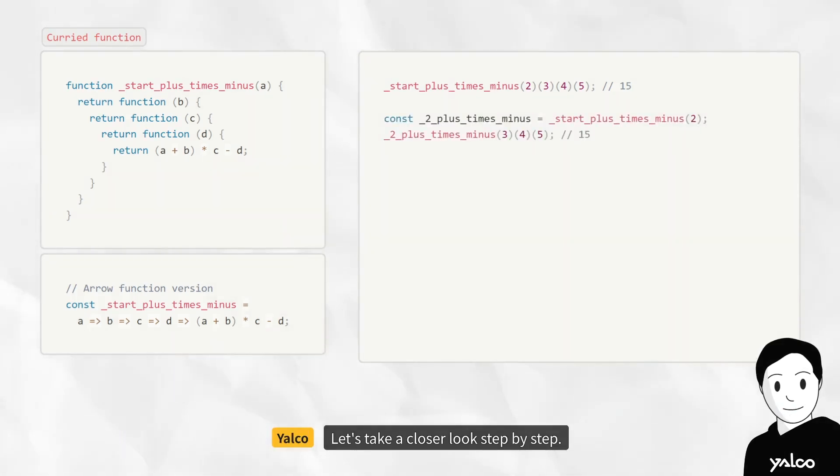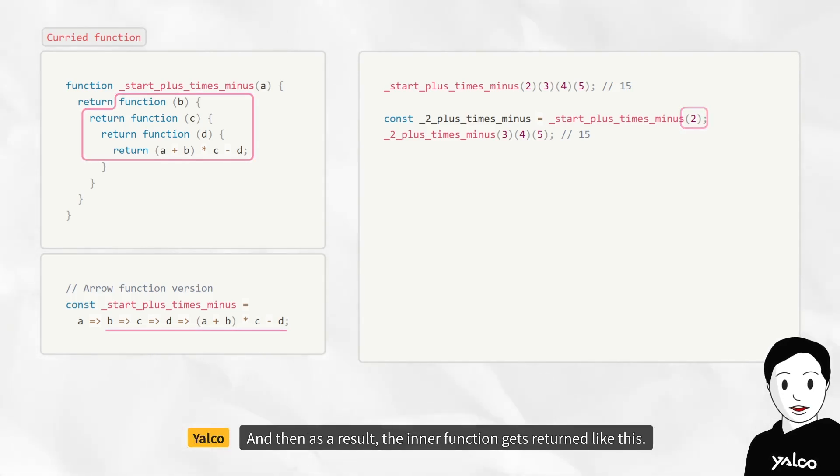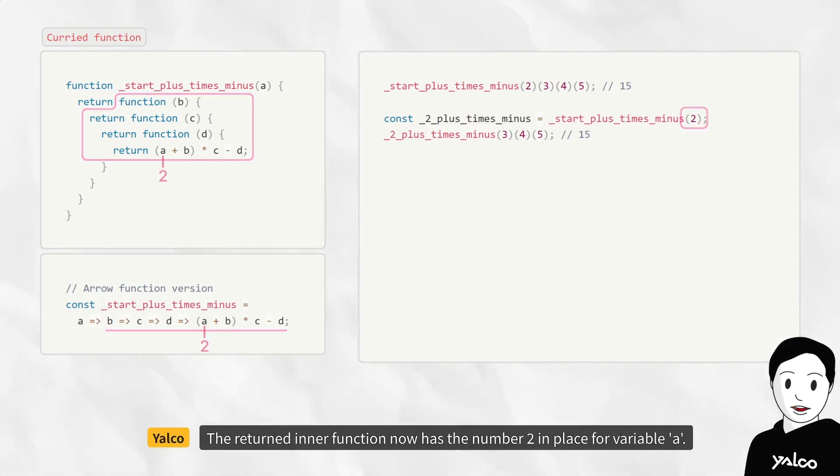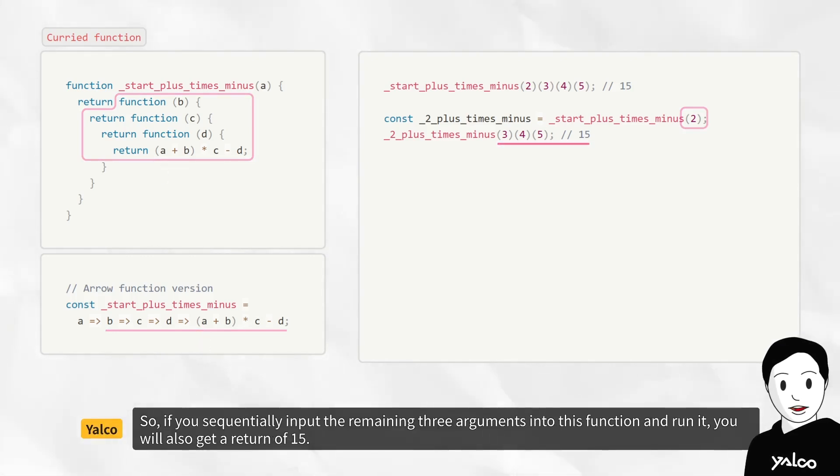Let's take a closer look step by step by putting in the first argument like this, and then as a result, the inner function gets returned like this. The returned inner function now has the number 2 in place for variable a. So, if you sequentially input the remaining three arguments into this function and run it, you will also get a return of 15.